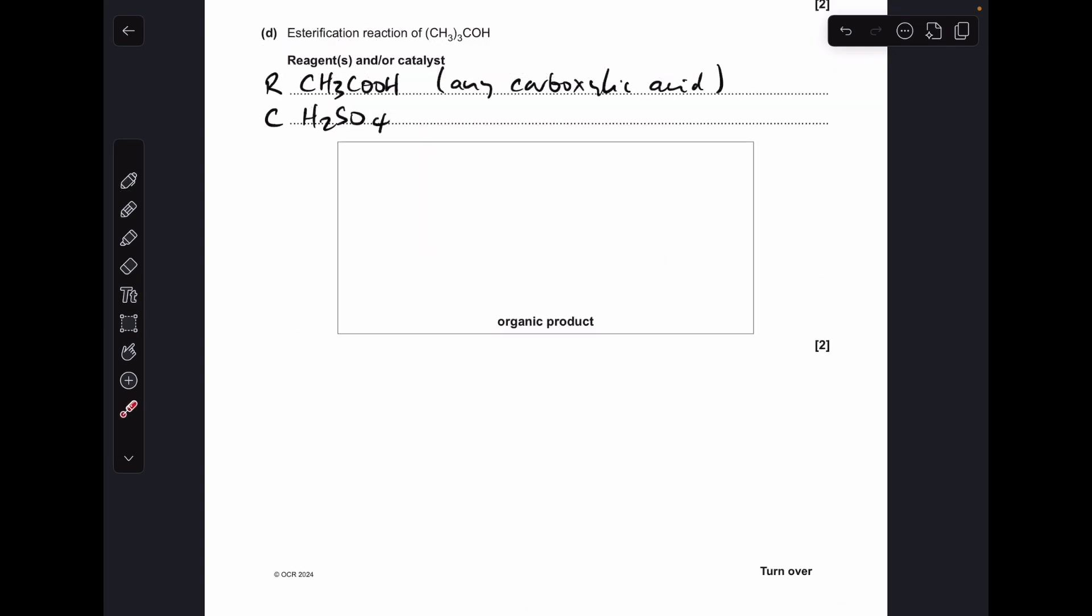And finally part D, esterification reaction of this alcohol here. You'll notice I've written any carboxylic acid there. I've just gone for ethanoic acid. You'd also need a catalyst of sulfuric acid. So that would be the structure of the ester I'd have to give. Obviously if you've gone for a different carboxylic acid, that's going to be reflected in this part here.